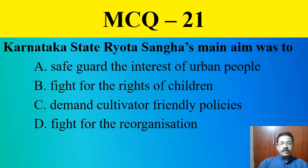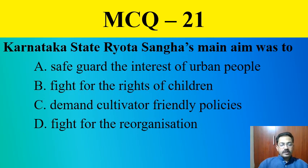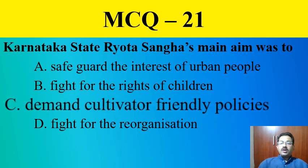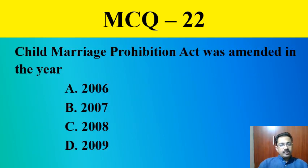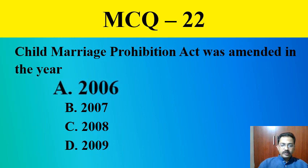MCQ question twenty-one: Karnataka State Raitha Sangha's main aim was to — safeguard the interest of urban people, fight for rights of children, demand cultivator-friendly policies, or fight for reorganization. The correct answer is demand cultivator-friendly policies. MCQ twenty-two: The Child Marriage Prohibition Act was amended in the year 2006.